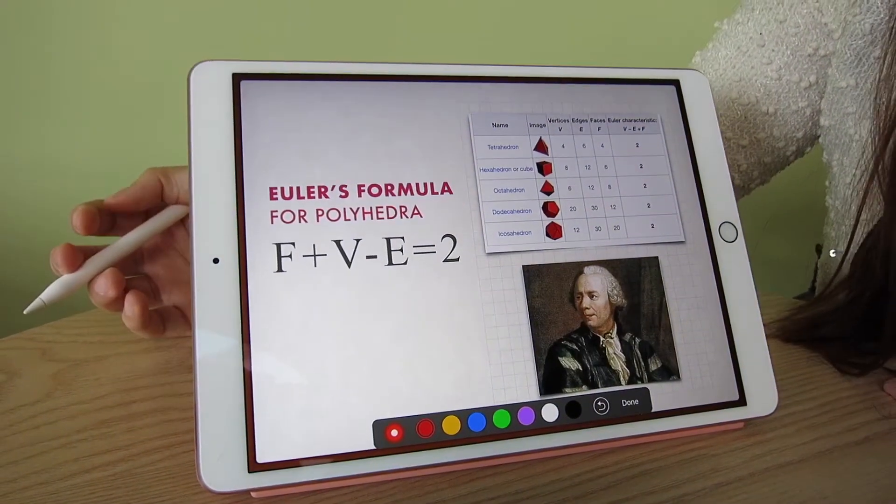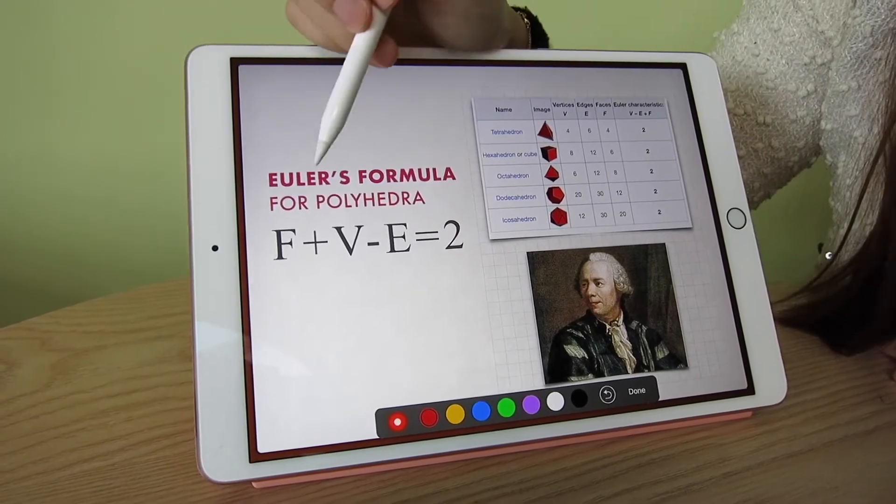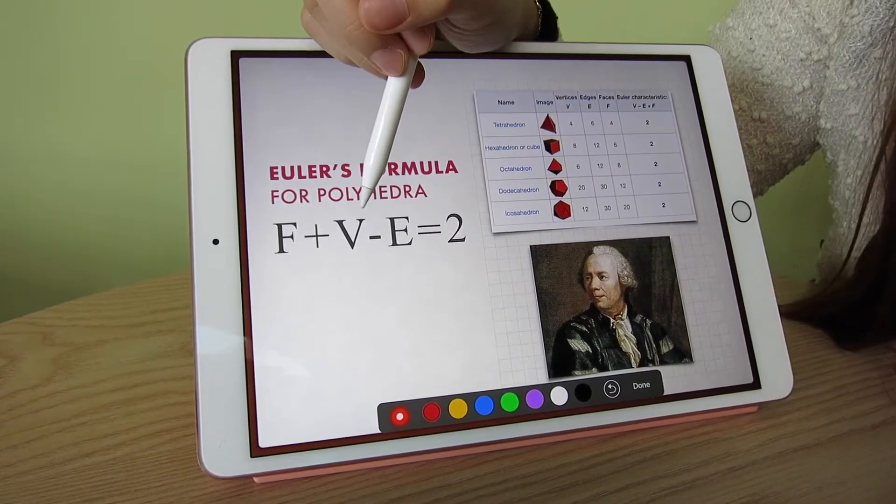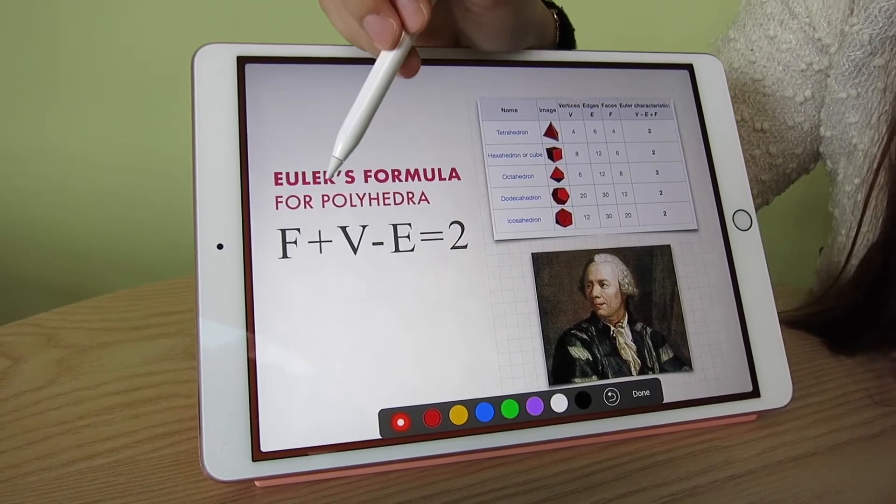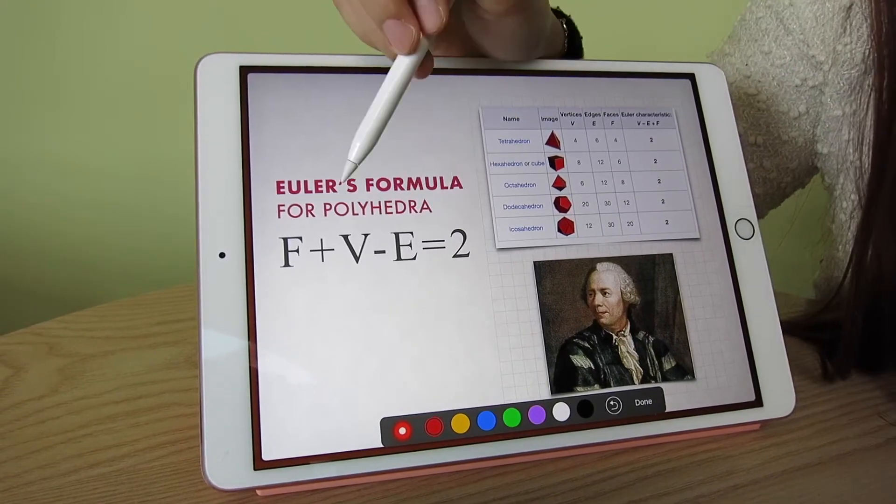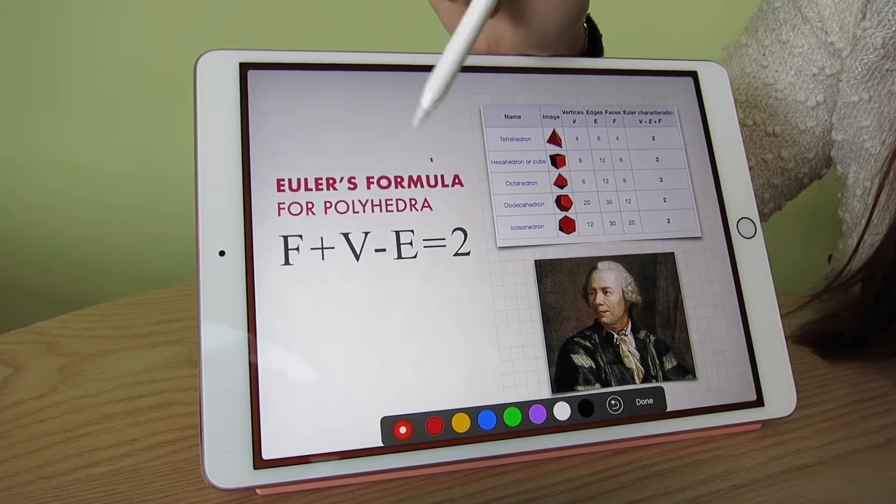If you don't know what is Euler's formula for polyhedron: F is for the face, V for the vertex, and E for the edge. This formula will always hold for any polyhedron.